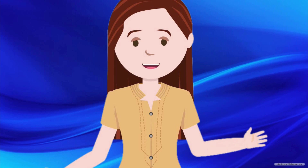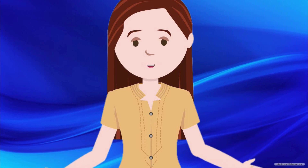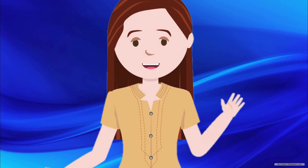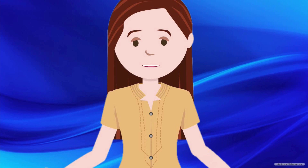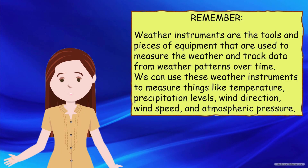Using different weather instruments helps you recognize patterns in weather conditions that will serve as your guide in planning your activity for the day. Kids, always remember that weather instruments are the tools and pieces of equipment used to measure the weather and track data from weather patterns over time. We can use them to measure things like temperature, precipitation levels, wind direction, wind speed, and atmospheric pressure.